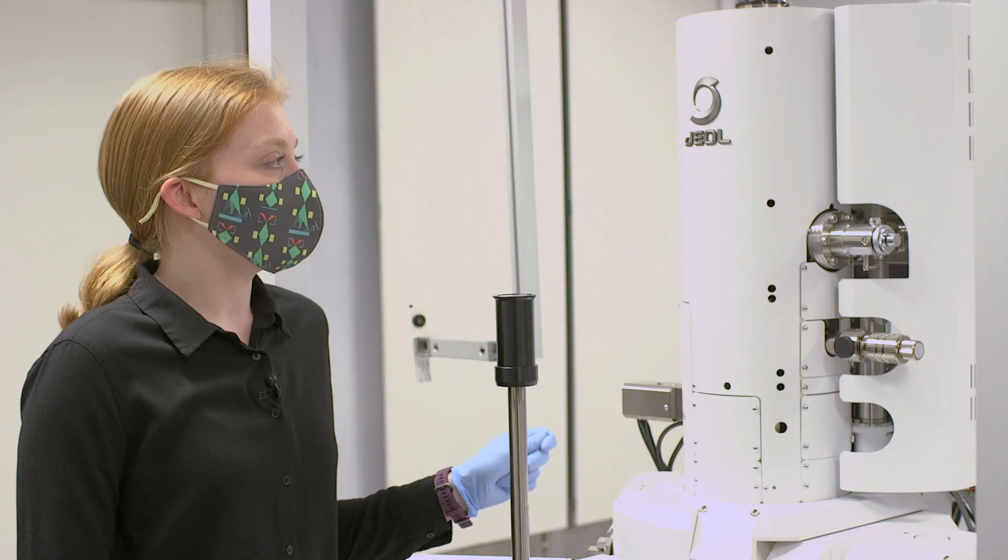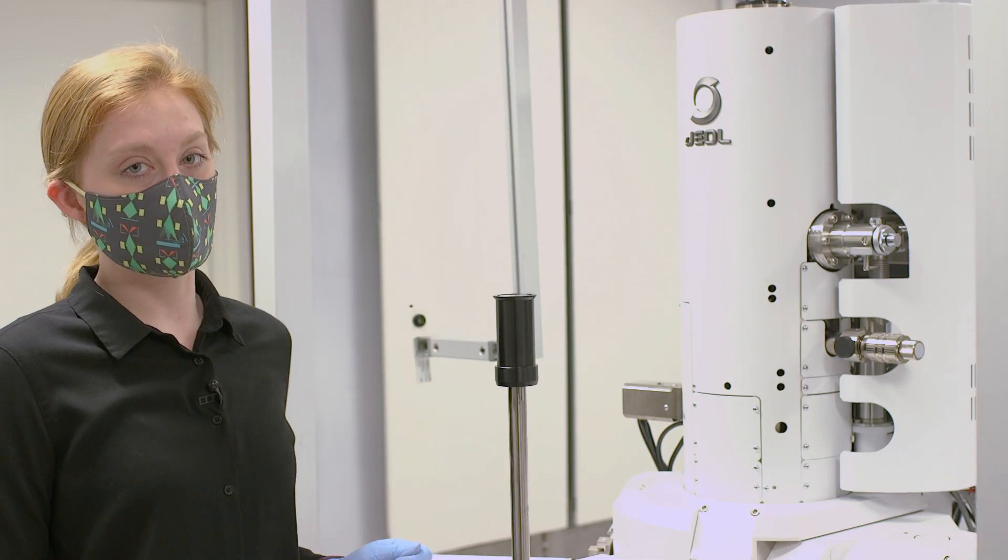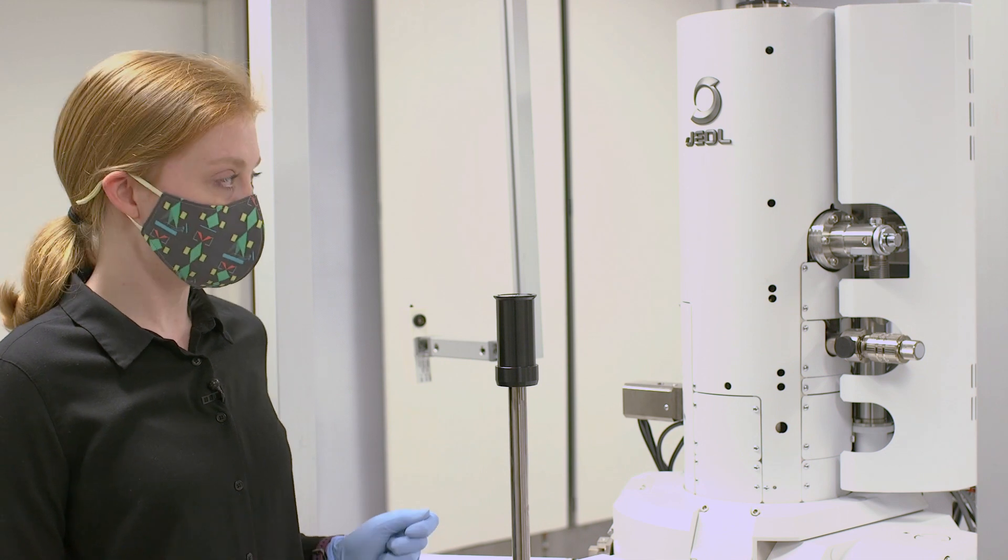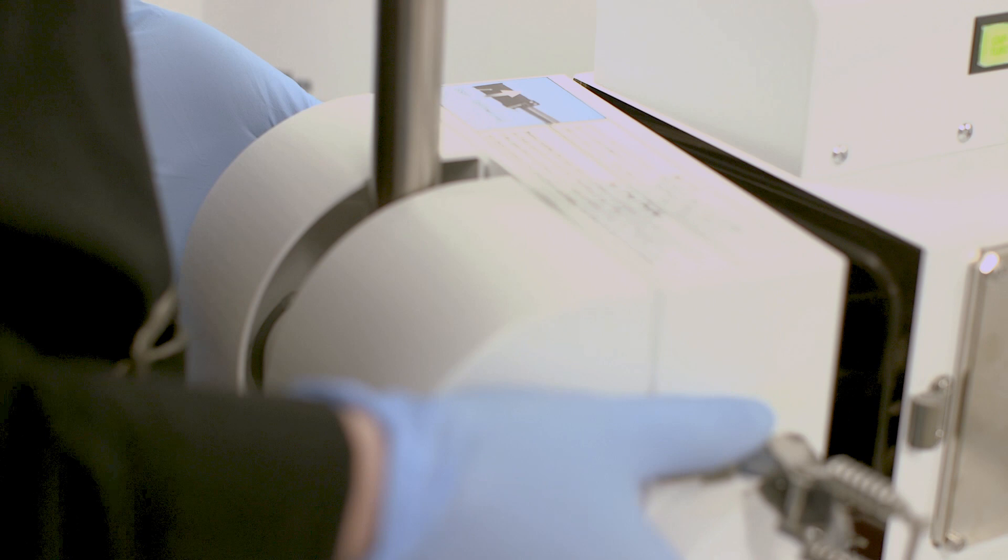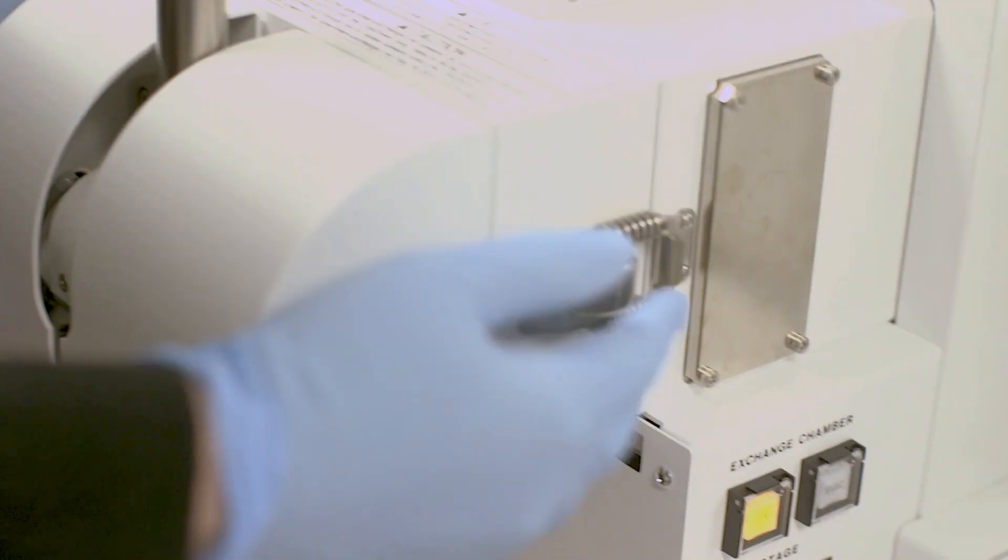The first electron microscope was actually built in 1931 by Ernest Ruska and Max Knoll. And Ernest Ruska actually won a Nobel Prize in 1986 for building the first electron microscope.